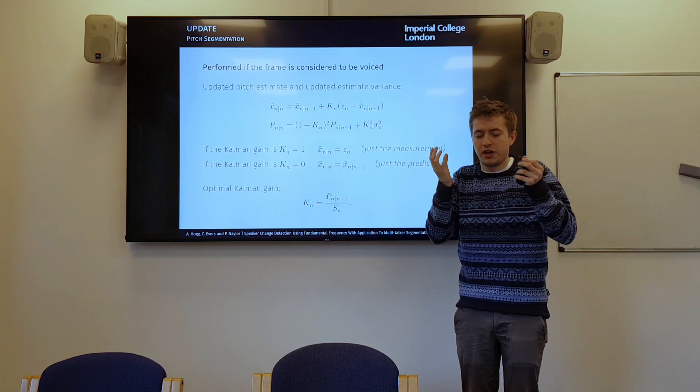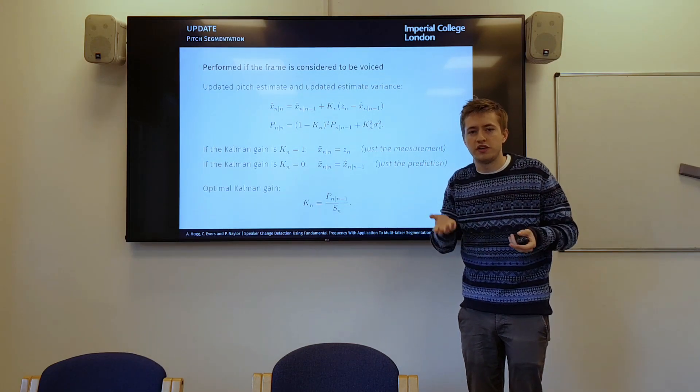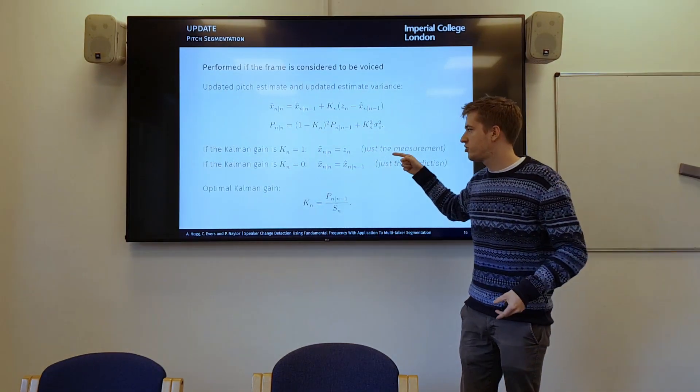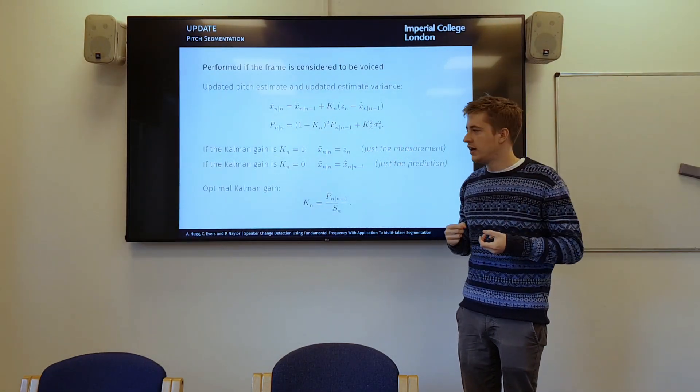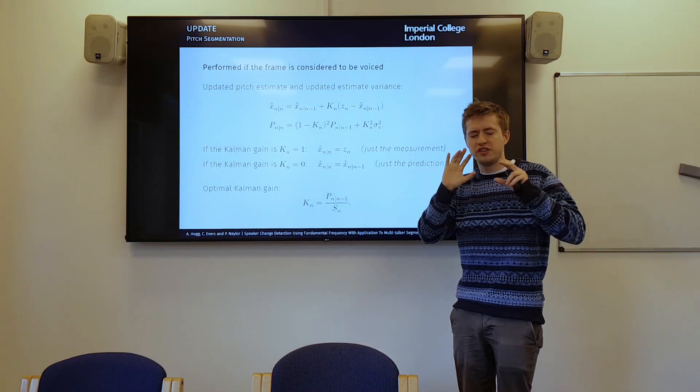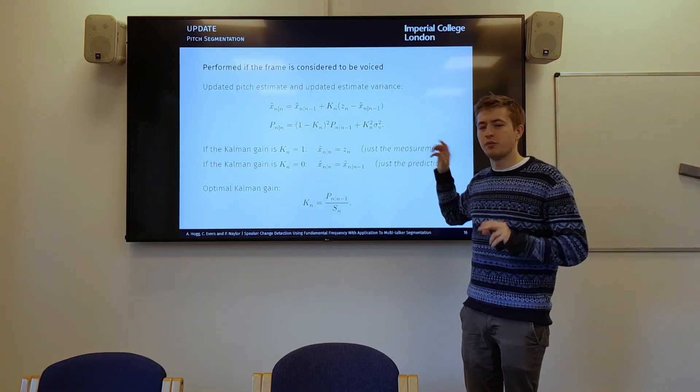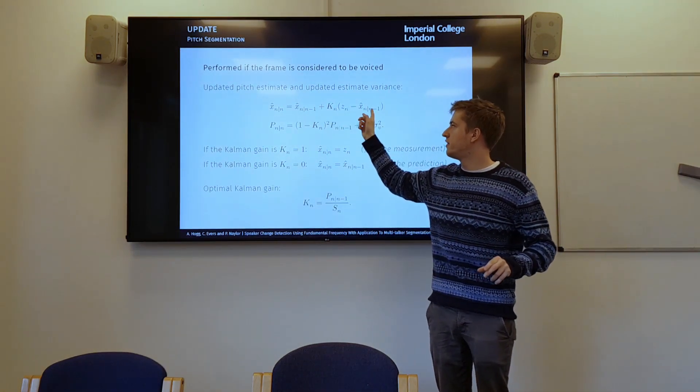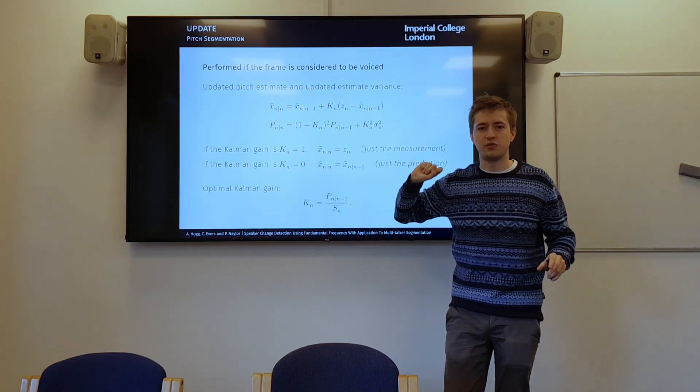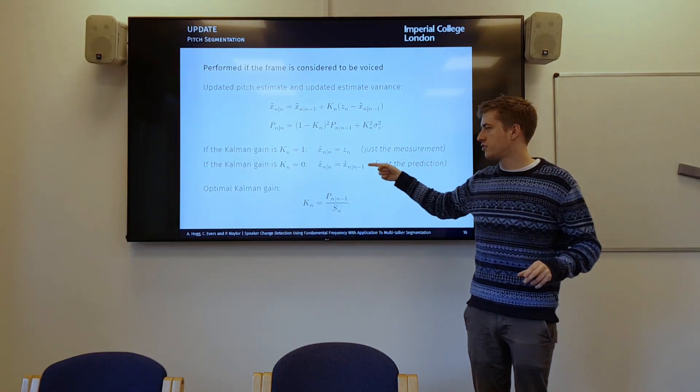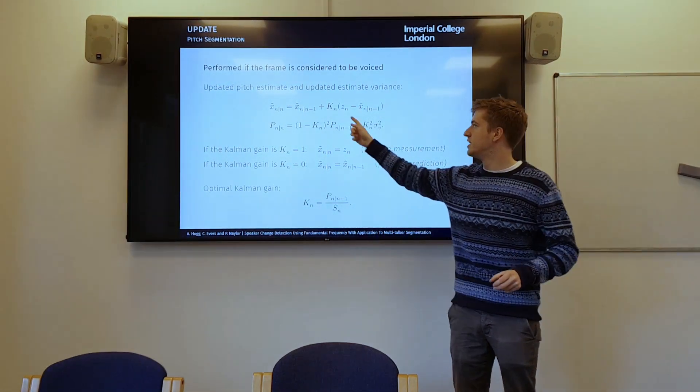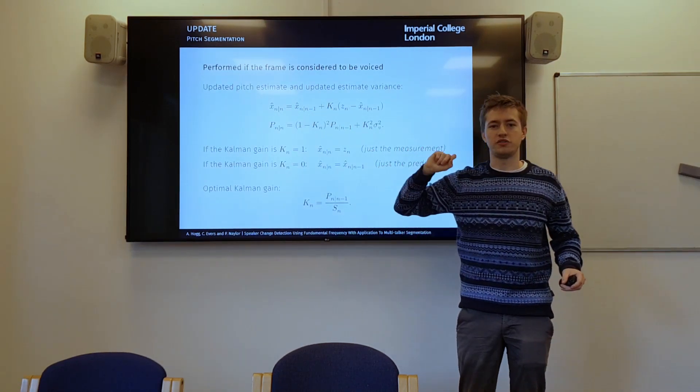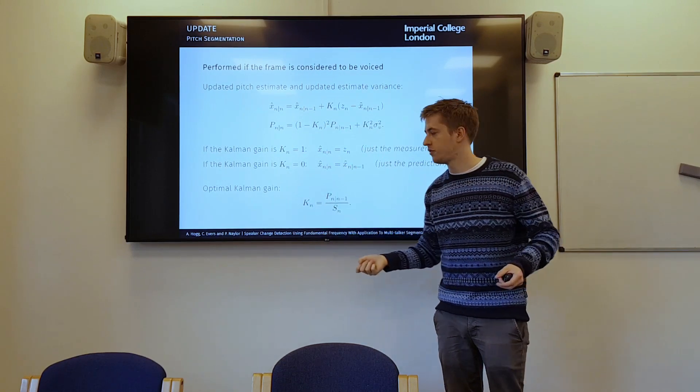But how do we trade off between those two things, our prediction and our actual observation? And that's what a Kalman gain does. So in the extreme case where the Kalman gain would be one, that would mean that we would just use the measurement, that our model is so bad that we should just use the measurement and ignore the model completely. Which you can imagine if this is one, then this cancels out with this and you're just left with z, which is the observation. However, the other extreme would be when the model is 100% accurate, k would become zero and this would completely disappear. And you would just get the model where you're saying that the pitch is equal to the pitch in the previous frame.